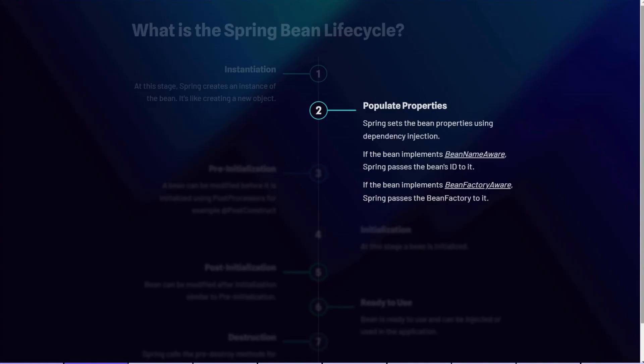The setBeanName() method receives the assigned ID or name of that bean, so the bean knows its own ID within the Spring context. At the same stage, Spring also checks if the bean implements the BeanFactoryAware interface. If yes, it calls the setBeanFactory() method on the bean, making the bean aware of the bean factory that created it.